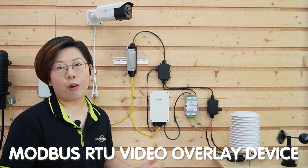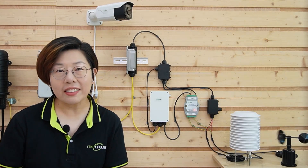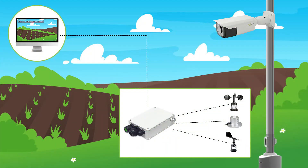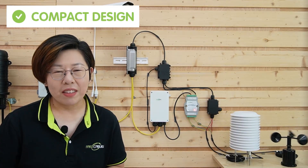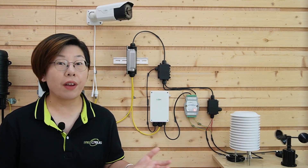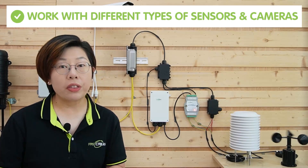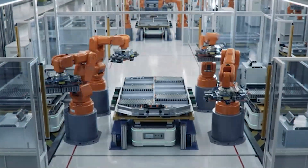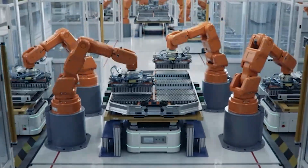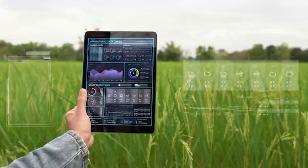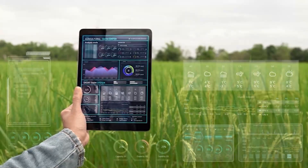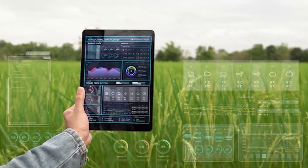Now let's get to the magic behind the curtain: the Modbus RTU video overlay device. This little box is what makes everything possible — it integrates the sensor data into your video feed in real-time with low latency. The design is compact, making it easy to install in various IoT setups. It works with different types of sensors and cameras, so whether you're setting up a smart factory floor, monitoring environmental conditions on a farm, or beefing up your security system, this device is versatile and crucial for real-time video feed.